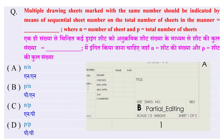Multiple drawing seats marked with the same number should be indicated by means of sequential seat number on the total number of seats in the manner where n equals the number of seat and p equals the total number of seats. The right option is small n upon small p — यानि seat की संख्या बटा seat की कुल संख्या।